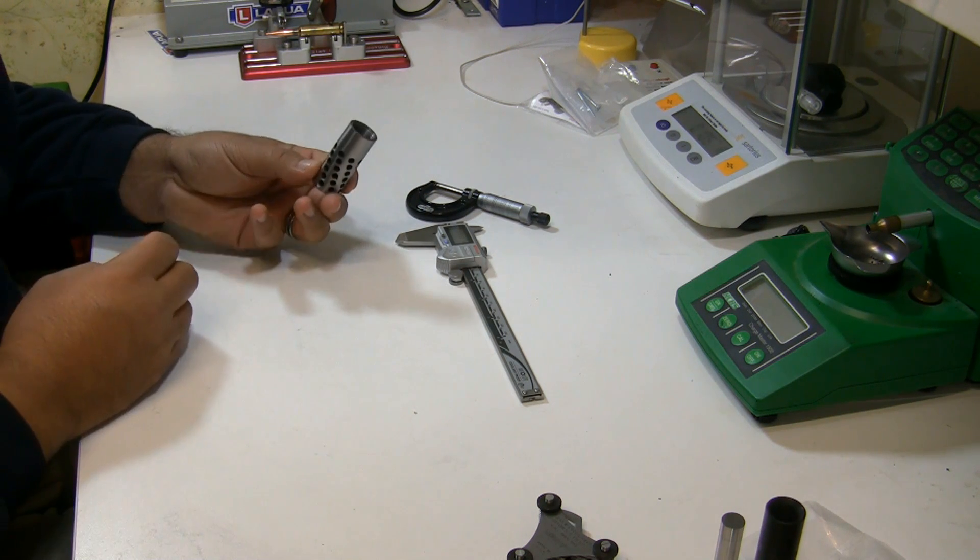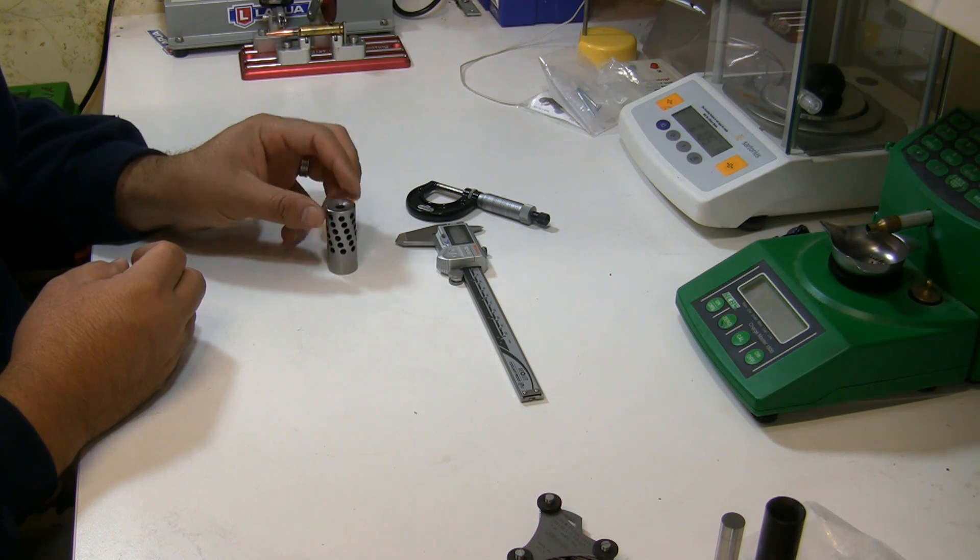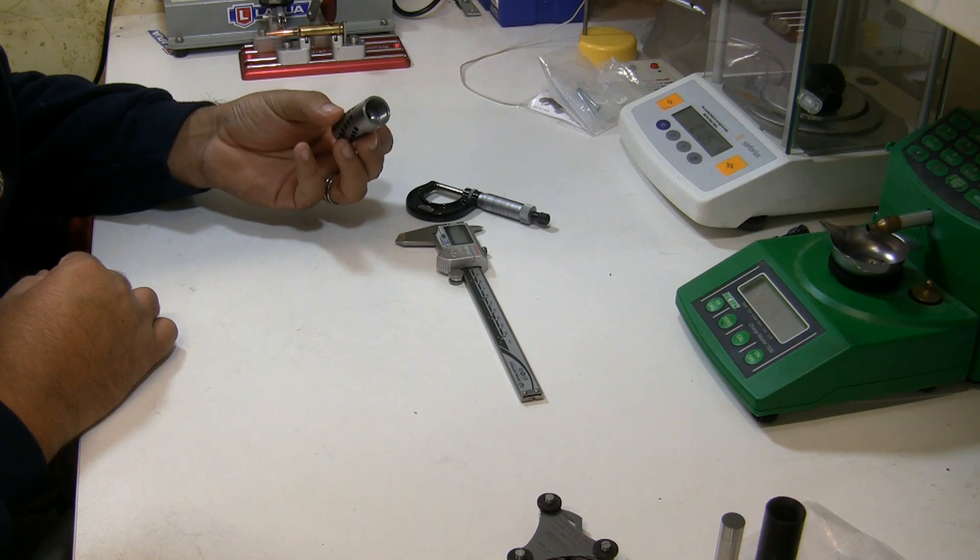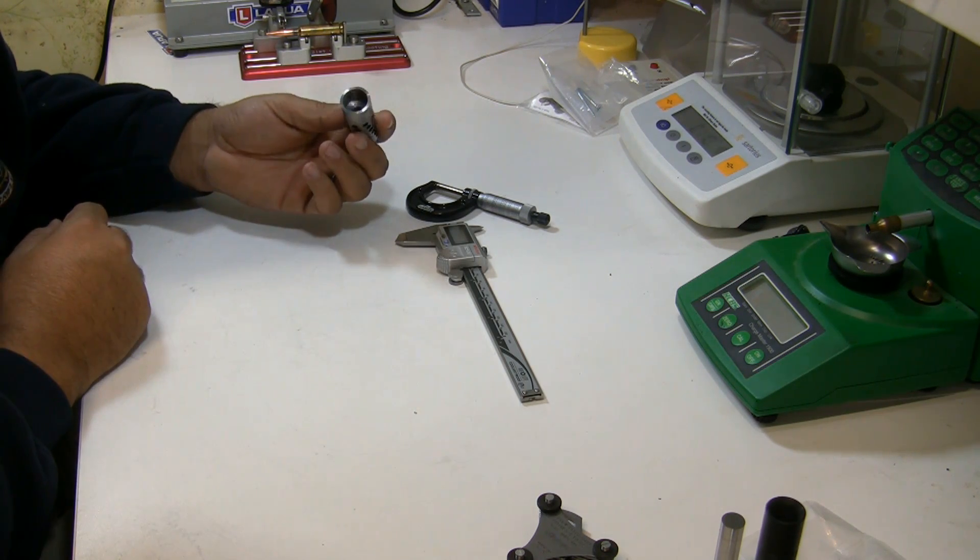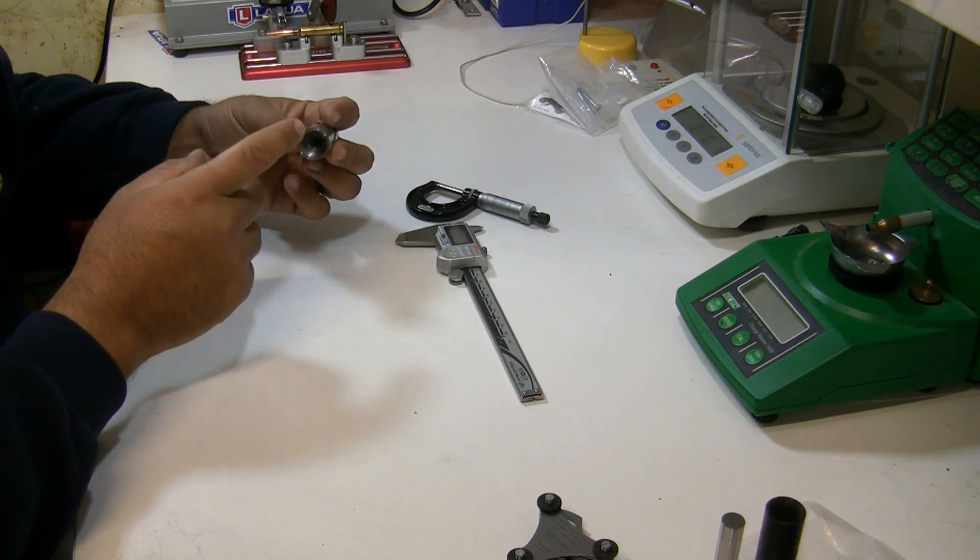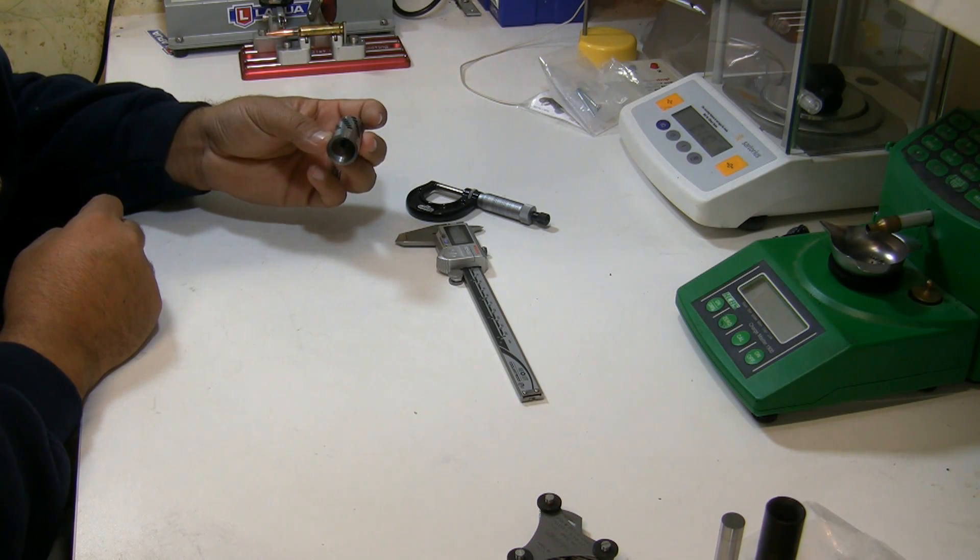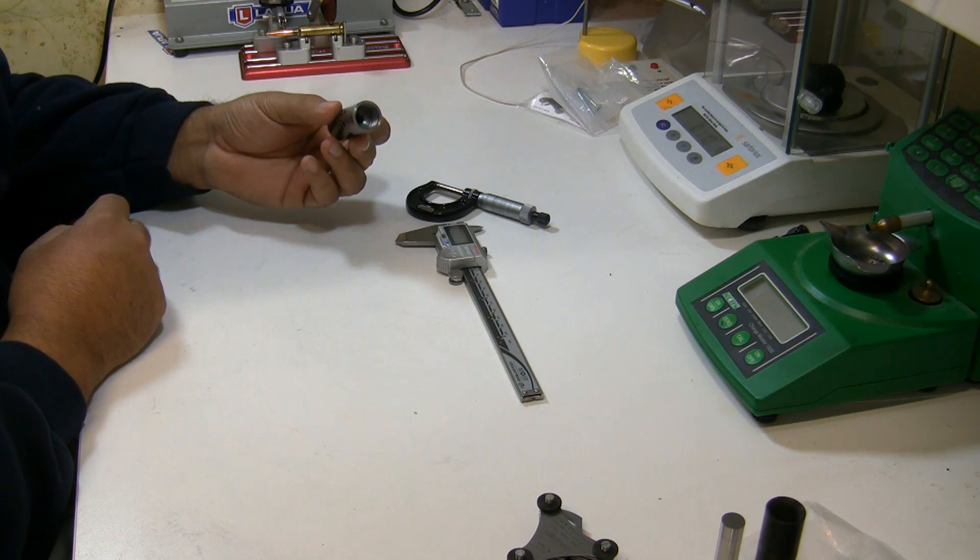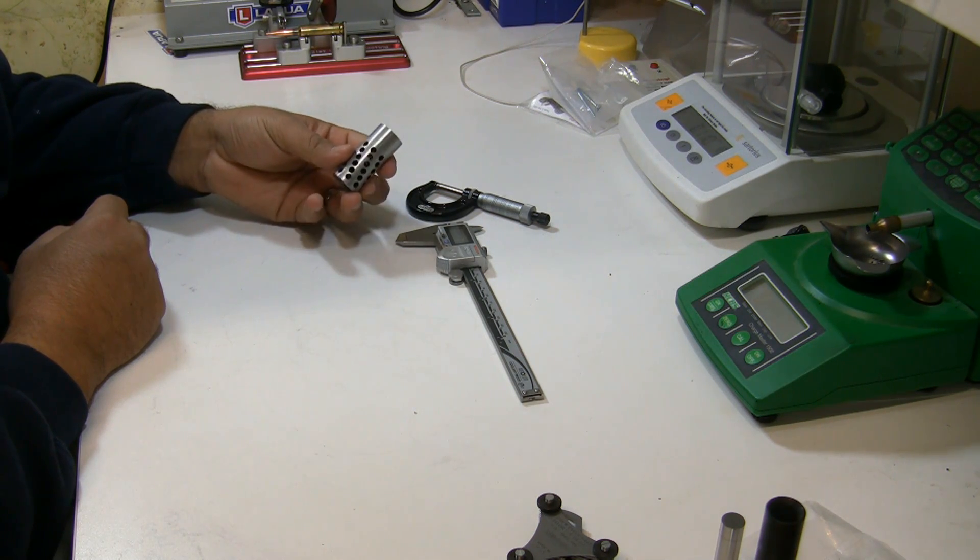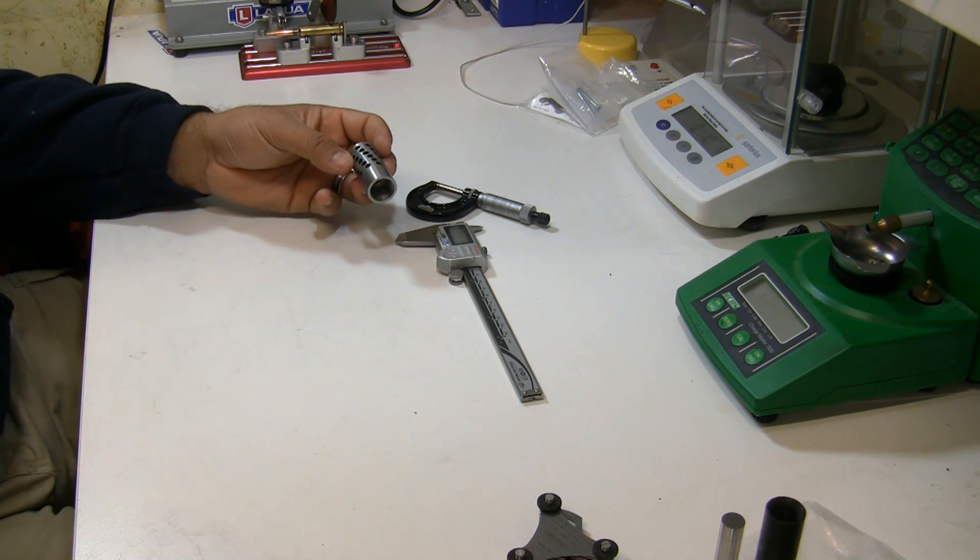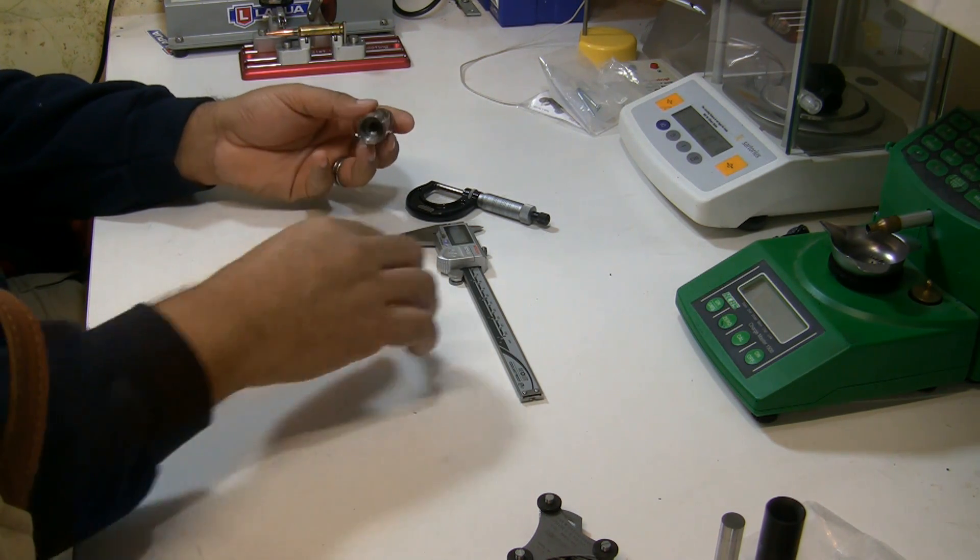I have this muzzle brake here that I need to find out what thread it is, what thread size, because I need to make a tuner to fit on the barrel that this muzzle brake goes on. So first thing I need to do is find out what size the thread is and then I can go from there.